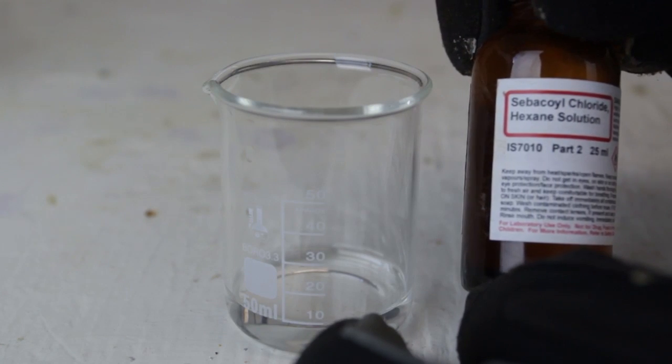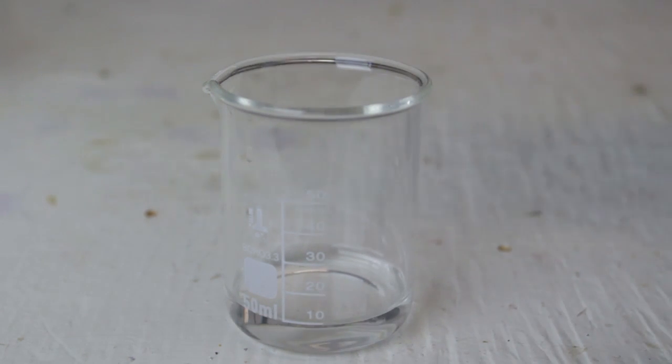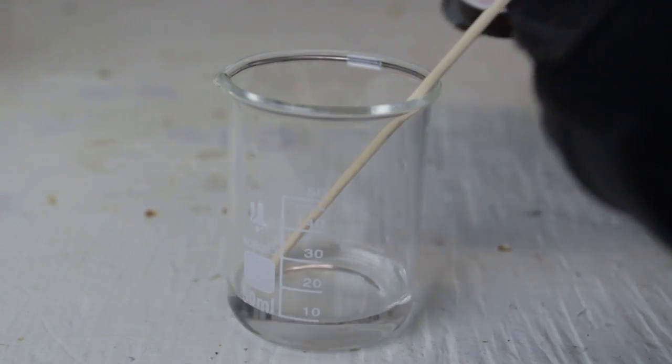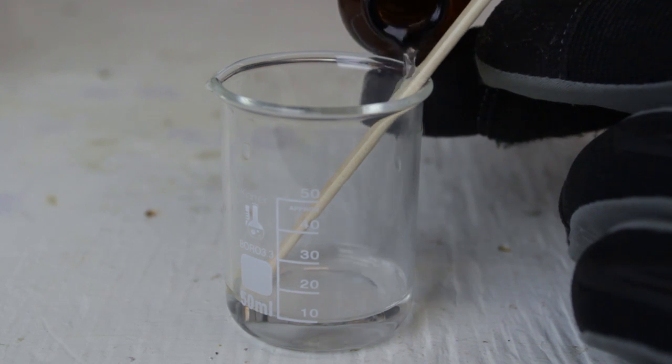Then we're going to slowly add sebacoyl chloride. Don't mix it. So what I'm going to do is grab one of those sticks right here and I'm going to pour it right on top of it, and I'm going to get another 10 milliliters.